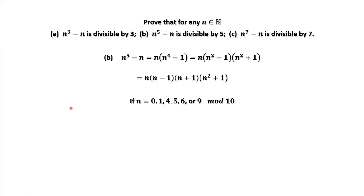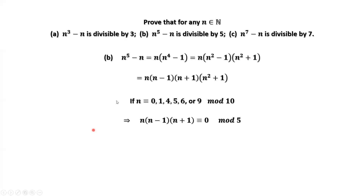Let's consider the last digit of N. In number theory, we use modular notation. The last digit of N can be 0, 1, 2, 3, 4, up to 9. We consider these last digits first; later on we will consider other situations. We use the product of the first three factors here.